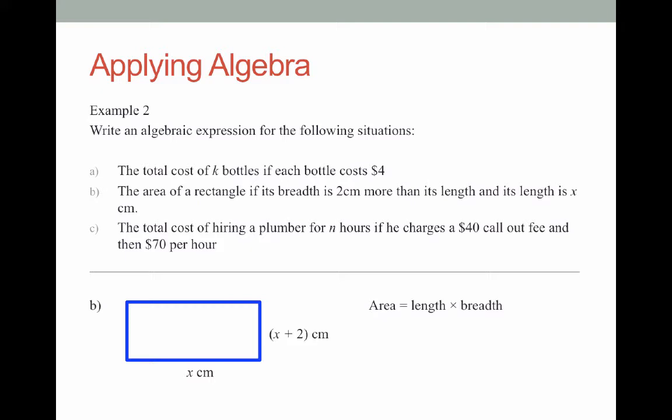So because the length is x centimeters the area will be x multiplied by its breadth which is x plus two. And in algebra we write that without the multiplication symbol as just x outside of x plus two. That is the area of a rectangle whose breadth is two centimeters more than its length.